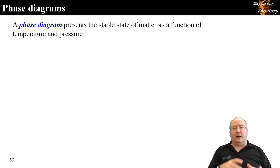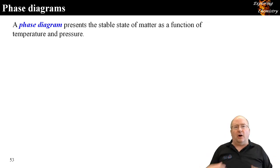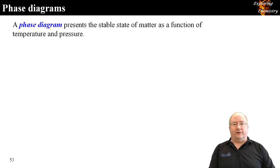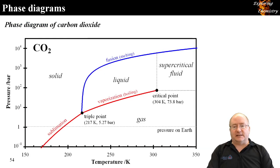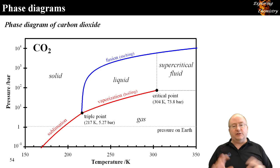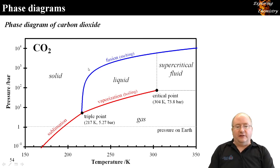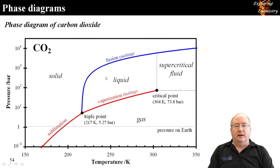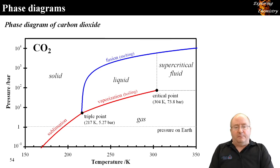Bringing all of this together, we have the concept of a phase diagram, which presents the stable state of matter as a function of temperature and pressure. There are typically three lines: a sublimation line between gas and solid, a vaporization line between gas and liquid, and a fusion line between solid and liquid.